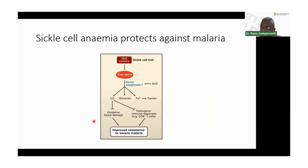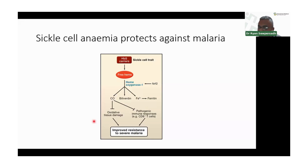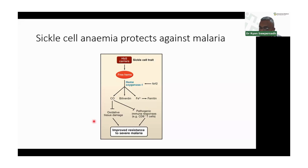In other words, having sickle cell anemia is genetically related to having relative protection against Plasmodium. The same applies to other diseases like thalassemia and G6PD deficiency, which make the parasite-infected red cell more susceptible to dying from oxidative stress.